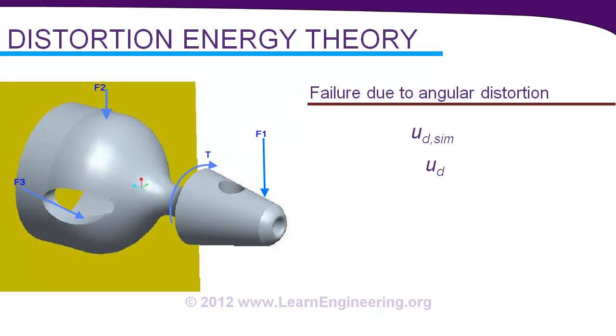And according to distortion energy theory we'll compare these two energies. And it says that when distortion energy per unit volume in actual case is more than the distortion energy in simple tension test the material fails. So this is the theory. So let's have more analysis on this condition.